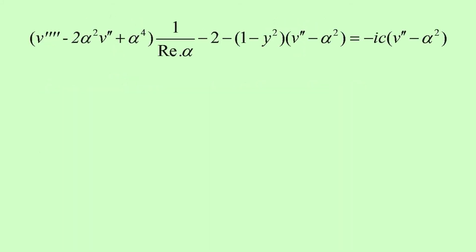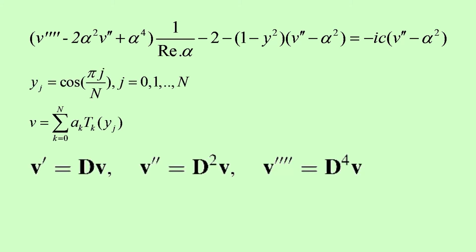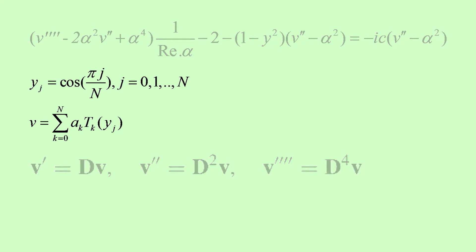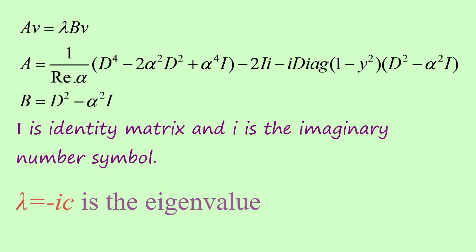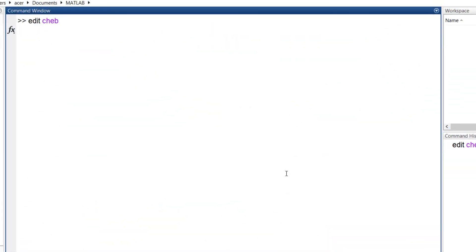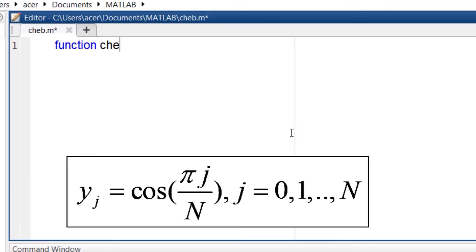So until now we have a linear fourth order equation. We consider v to be a summation of N Chebyshev polynomials, and the powerful features of these polynomials allow us to write any higher-order derivative term in matrix form. Rewriting the Orr-Sommerfeld equation in matrix form leads to an eigenvalue problem, and to solve it I use MATLAB. First I need a function to create Chebyshev nodes and this differentiation matrix — this is the general form of Chebyshev nodes.